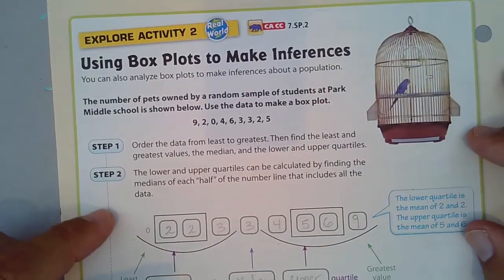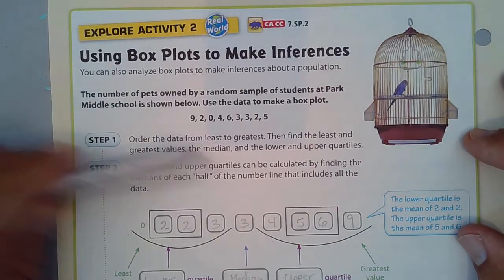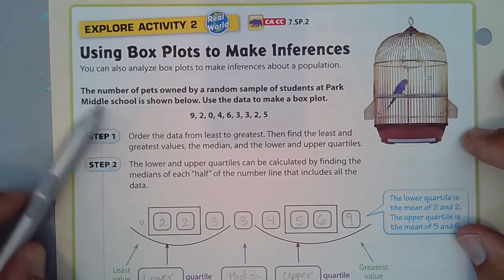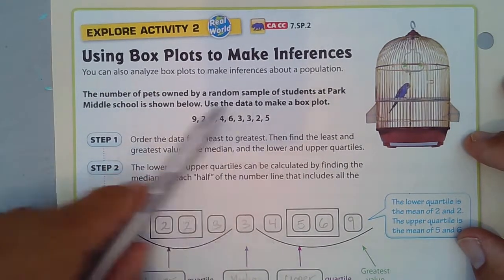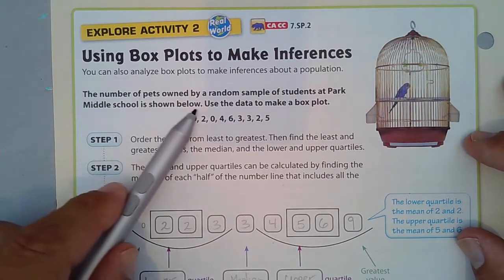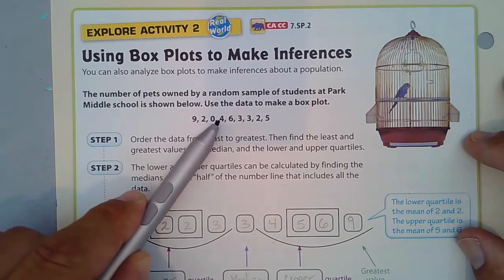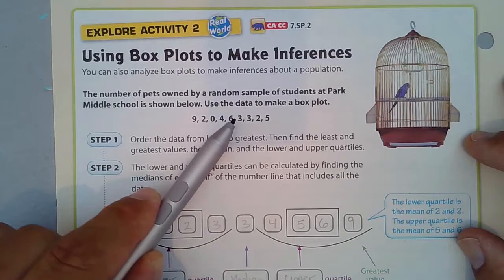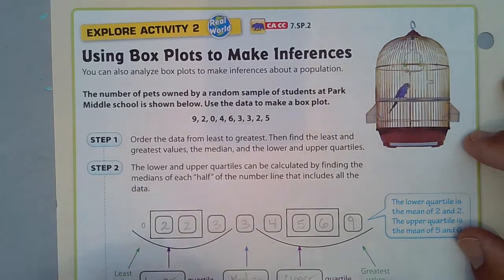Our Explore Activity number two: using box plots to make inferences. Box plots were discussed in sixth grade, but you're going to be reminded of them here. You can also analyze box plots to make inferences about a population. The number of pets owned by a random sample of students at Park Middle School is shown below. Use the data to make a box plot. A student has nine pets, another student has two, a student has zero, four, six pets, a student has three, another student has three, a student has two pets, and a student has five pets.